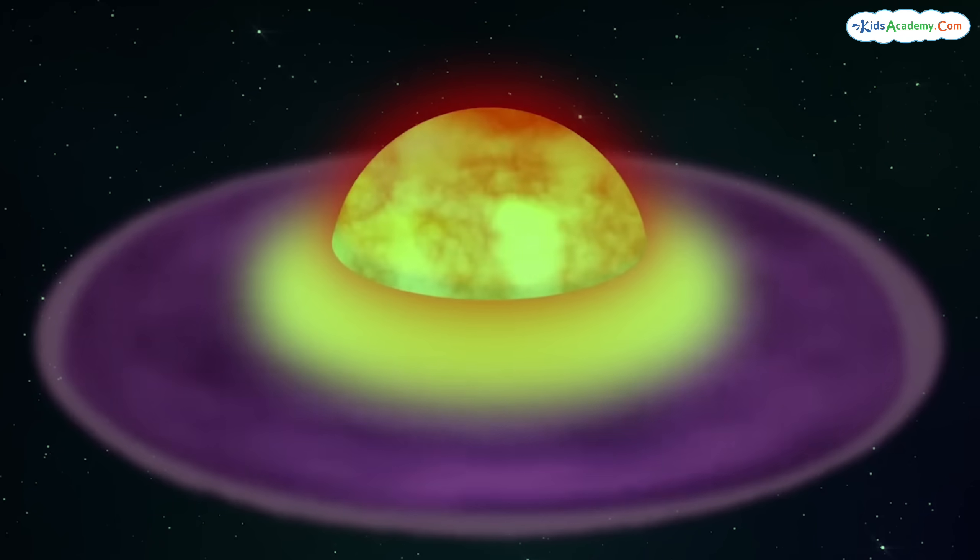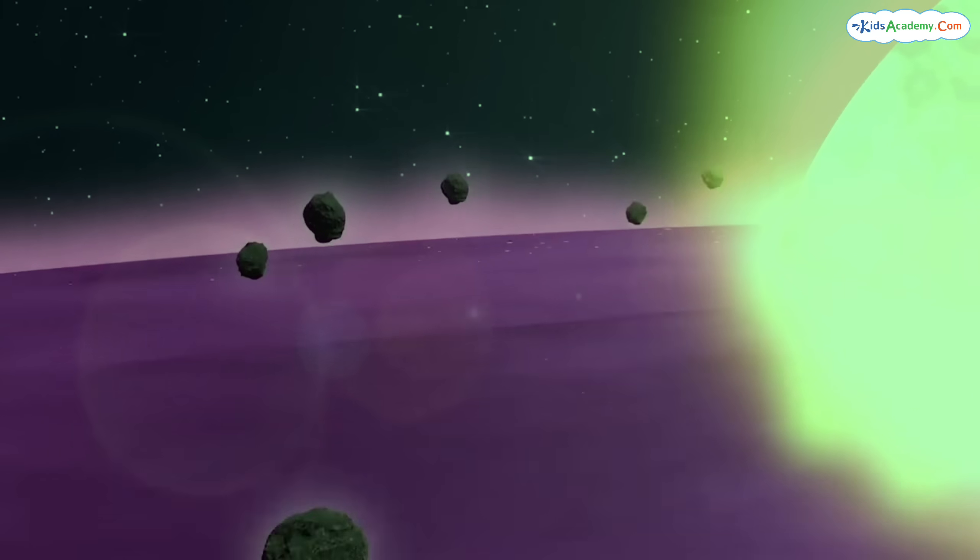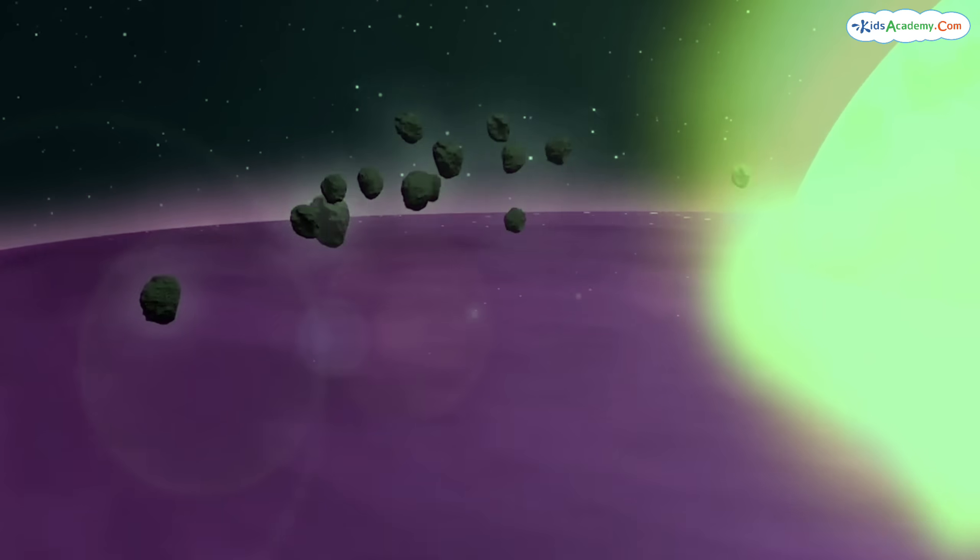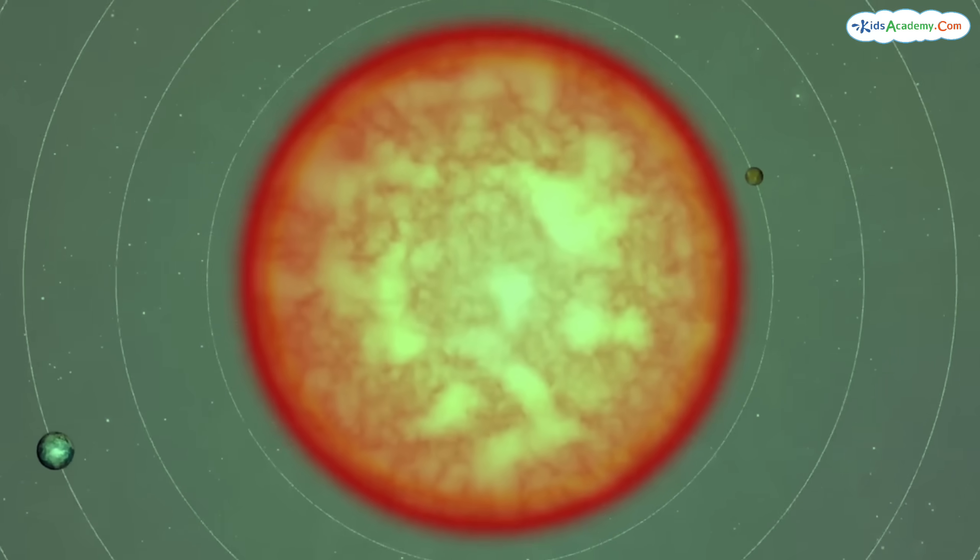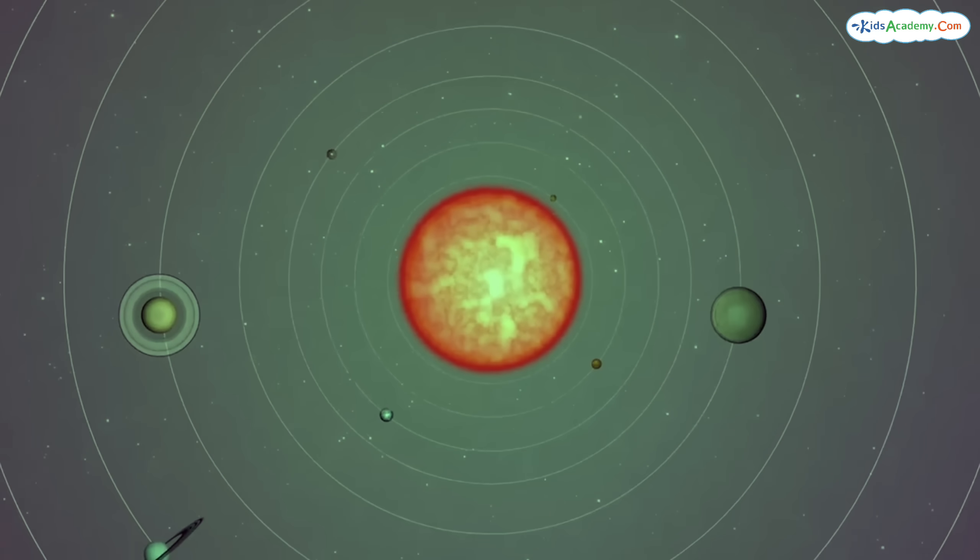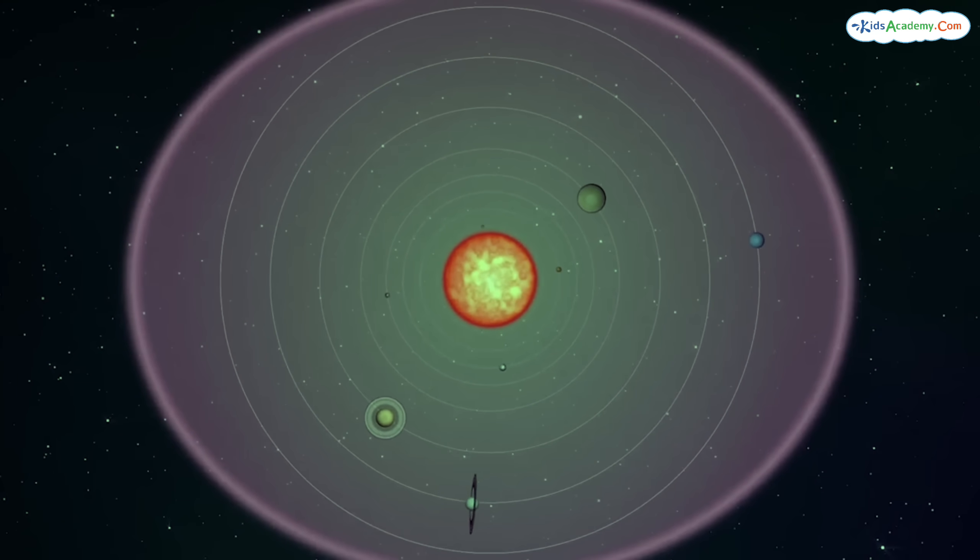Over millions of years, these swirling particles began to stick together and form tiny clumps called planetesimals. These planetesimals then collided and merged to form larger bodies, which eventually became the planets, moons, asteroids, and comets that make up our solar system today.